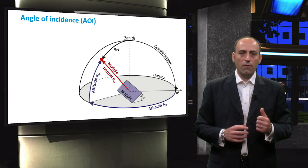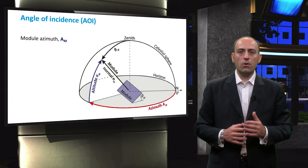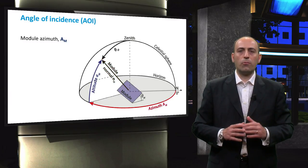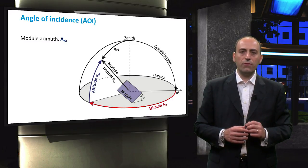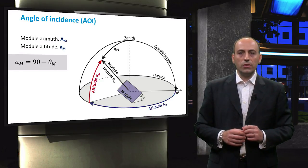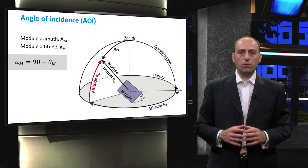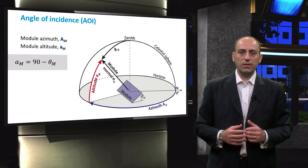First, we need the azimuth of the module, which is the angle between true north and the normal of the module projected on the horizontal plane. Be careful to not confuse the azimuth of the module with the azimuth of the Sun. The second coordinate we need is the altitude of the module, which is the complementary angle of the module's tilt as written in the equation.